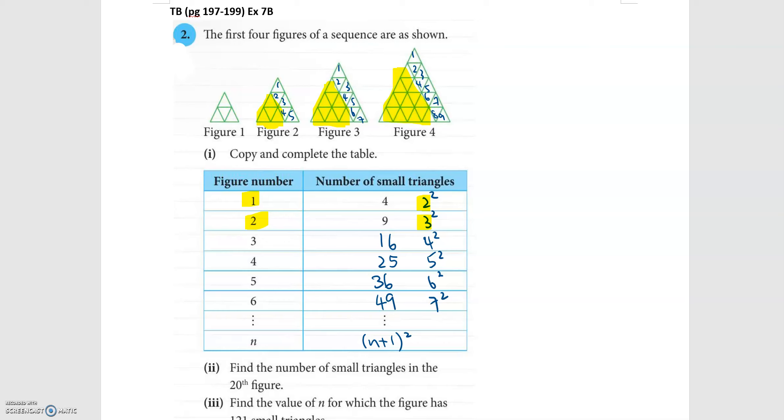This will help us to find the answer for part two. Find the number of small triangles in the 20th figure. So for the 20th figure, the number of small triangles will be 20 plus 1 squared which is 21 squared. That gives us 441 small triangles.